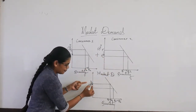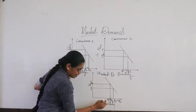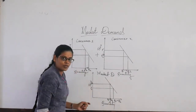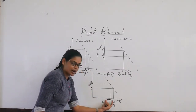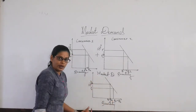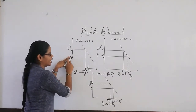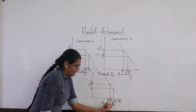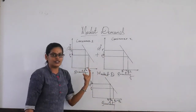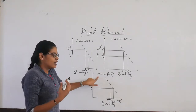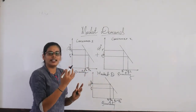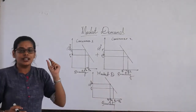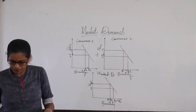At price P1, you can see Q1 quantity from consumer 2 and QA quantity from consumer 1. This is the quantity demanded by both consumers at price P1. At price P2, you can see Q2 and QB. We add the quantity demanded by both consumers. When we derive the market demand, it's like adding the demand curve of each and every consumer — you add all those quantities at each level of the price quoted.